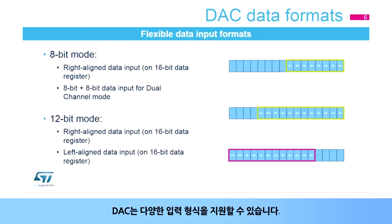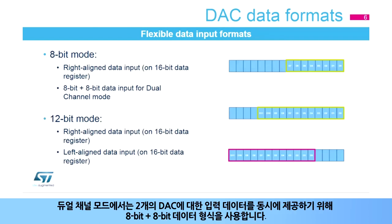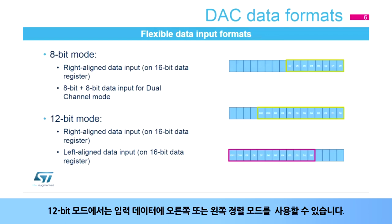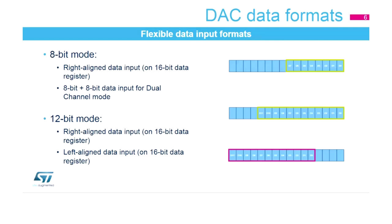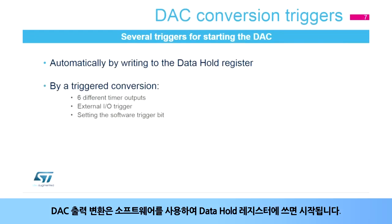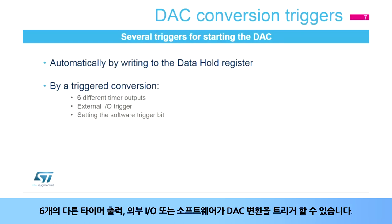The DAC can support different input formats. In 8-bit mode, it's a right-aligned 8-bit data format. In dual-channel mode, it's an 8-bit plus 8-bit data format, in order to provide input data for two DACs simultaneously. In 12-bit mode, either a right- or left-aligned mode can be used for input data. DAC output conversion is started by writing to the data hold register by software. Six different timer outputs, an external I/O, or software can trigger the DAC conversion.